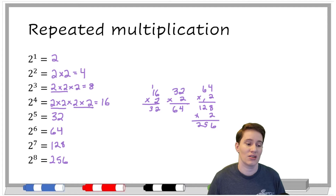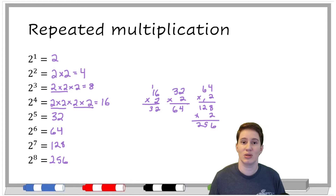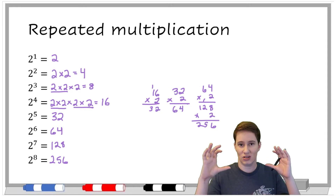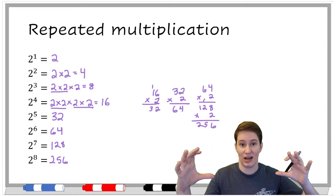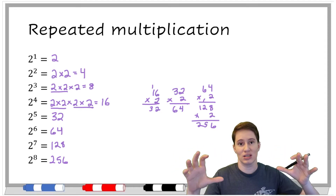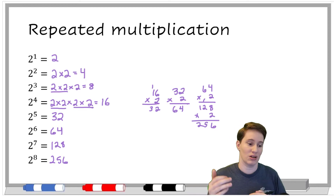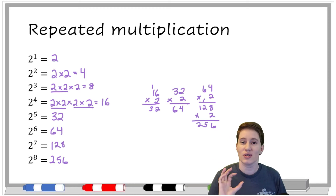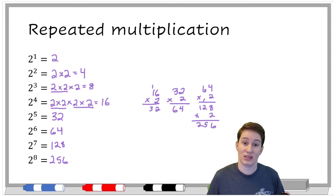And also I think eventually it does make it seem easier. If you see that you're supposed to multiply together two eight times, that may seem really intimidating. But if you see two to the eighth, even though you're doing the exact same thing, it just looks nicer because it's shorter.